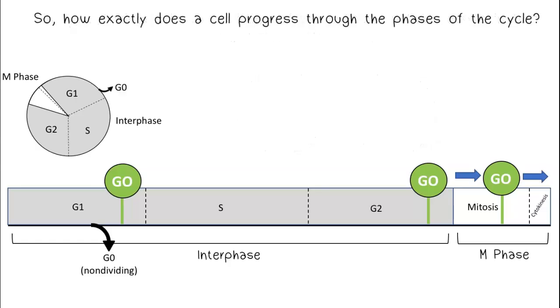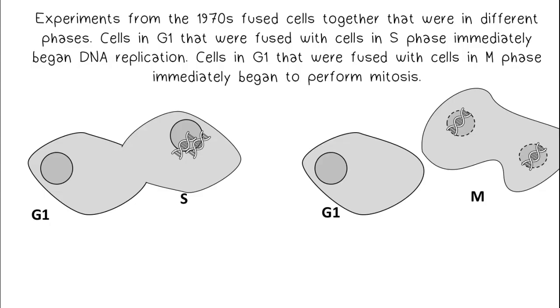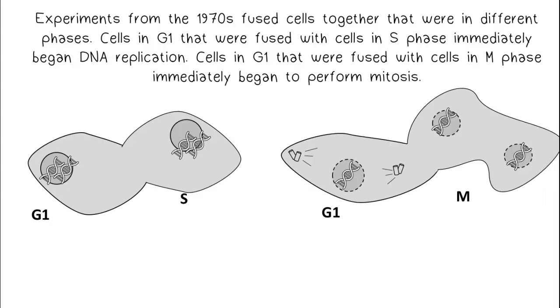So how exactly does the cell progress through the phases of the cycle? Experiments from the 1970s fused cells together that were in different phases. Cells in G1 that were fused with cells in S phase immediately began DNA replication. Cells in G1 that were fused with cells in M phase immediately began to perform mitosis.